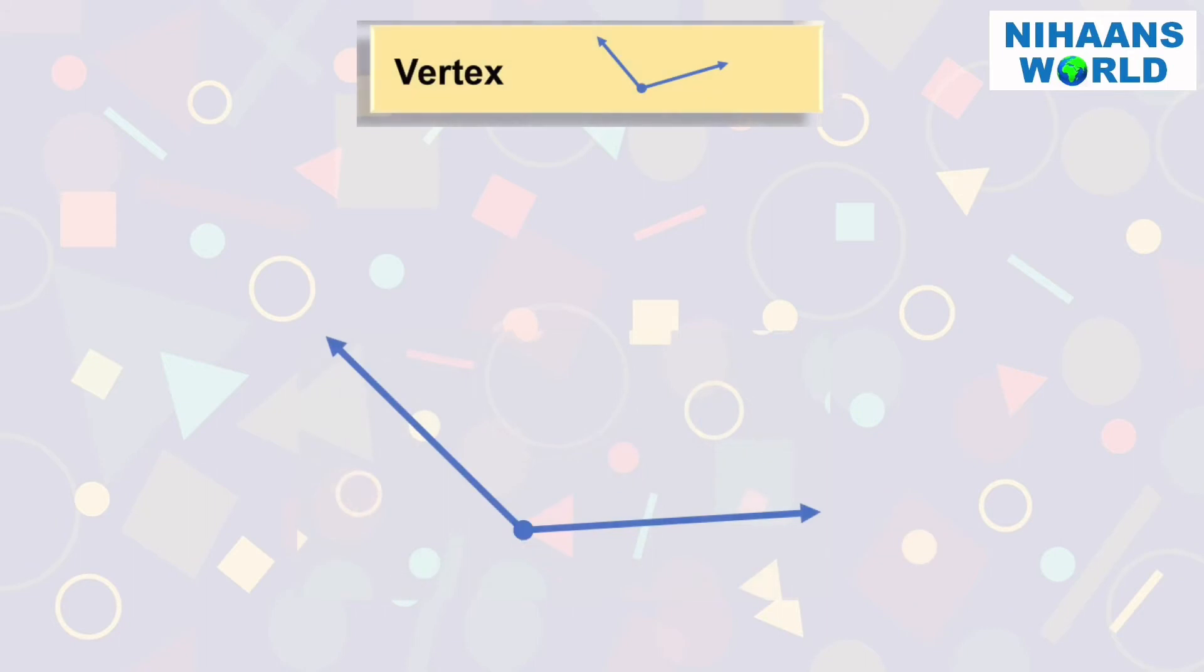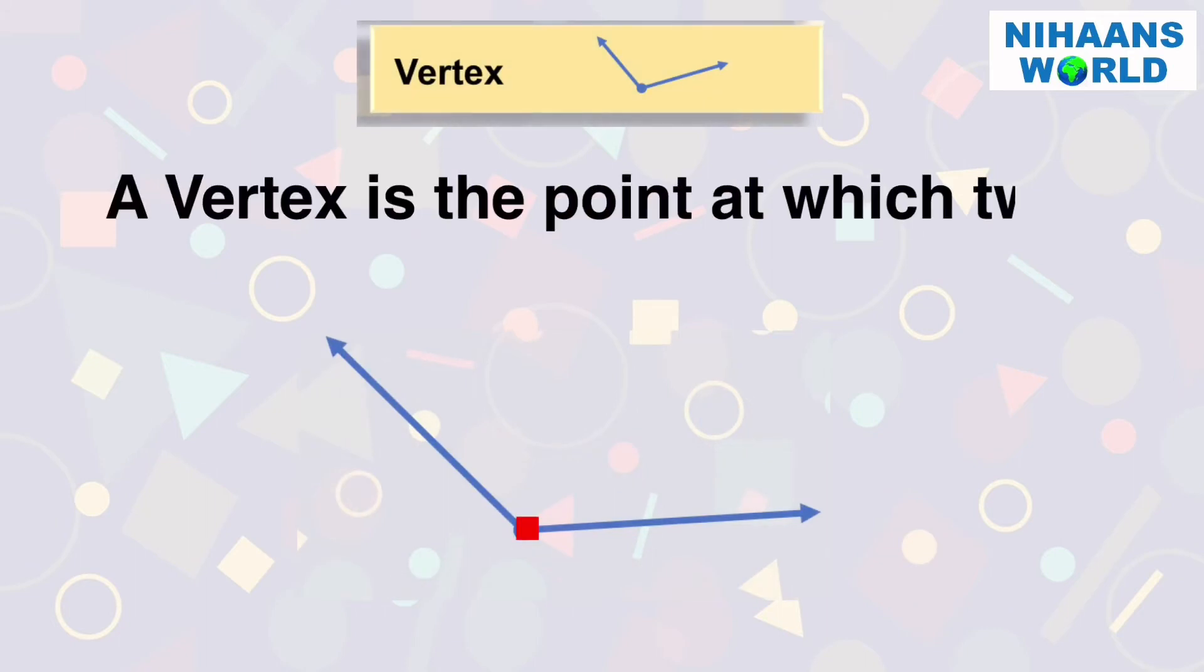What is a vertex? A vertex is the point at which two lines or rays meet to form an angle.